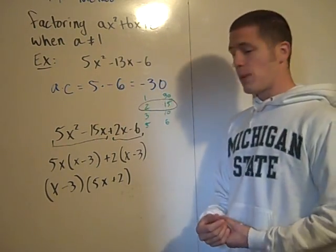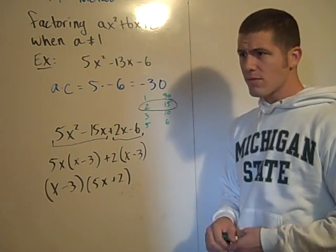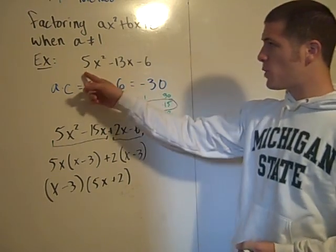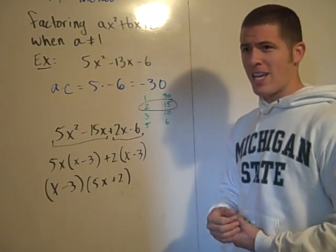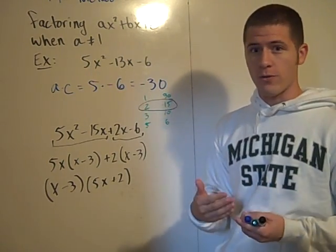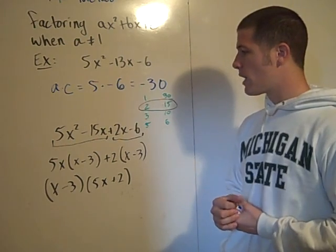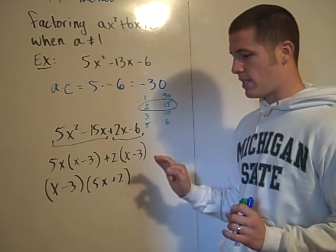Now perhaps this seems like a bit of a process and it seems like more difficult than guess and check. But I assure you that guess and check is time consuming, especially when you have an a value like 24. You know, if you have an a value like 24, do you start with 1 and 24, do you start with 2 and 12, 3 and 8. You know, there's a lot of options there. So this process, the AC method, guarantees you'll get it right every time.